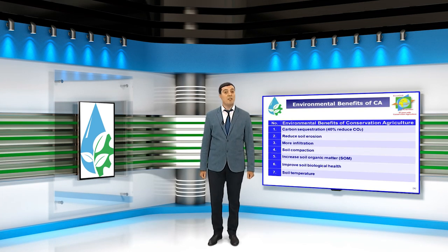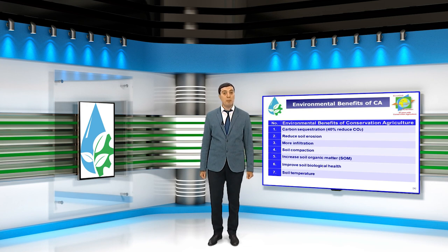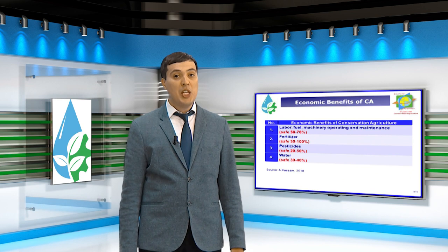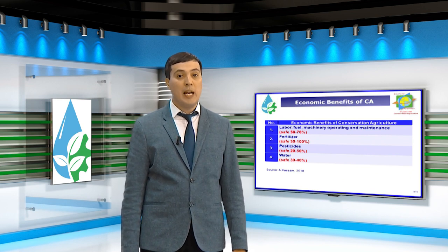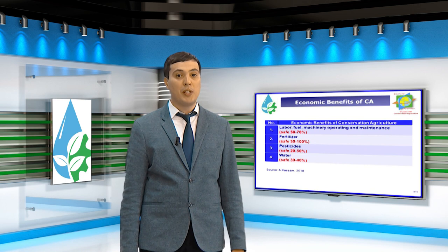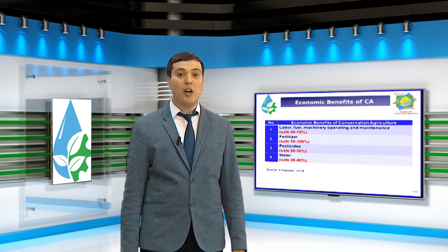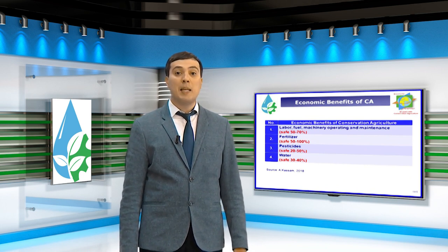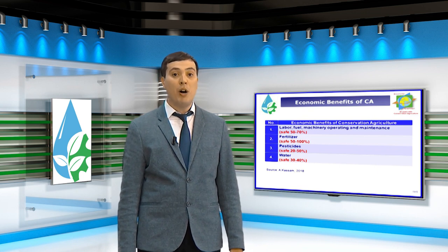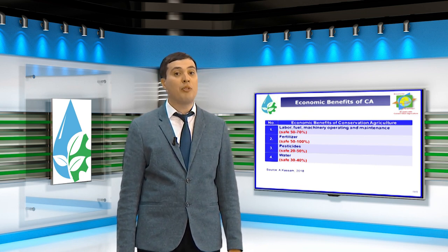Firstly, conservation agriculture is regarded as a carbon sequestration practice. It has been calculated that the total potential for soil carbon sequestration by agriculture could offset about 40% of the estimated annual increase in carbon dioxide emissions. Therefore, the implementation of this technology can lead to a reduction in carbon emissions and slow down the process of climate change.